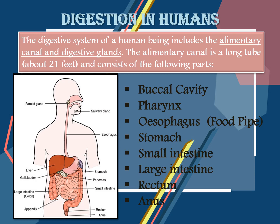The alimentary canal is a long tube about 21 feet and consists of the following parts: buccal cavity or oral cavity, pharynx, esophagus or food pipe, stomach, small intestine, large intestine, rectum, and anus.